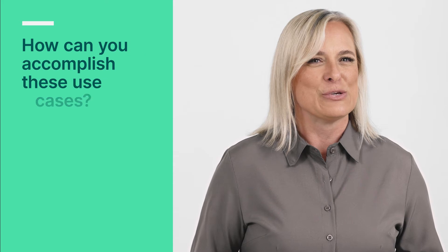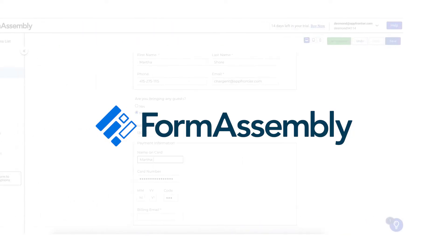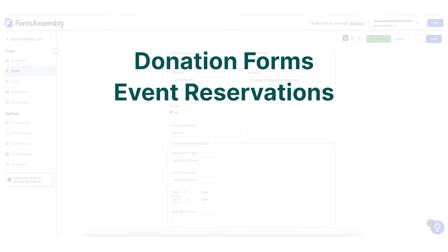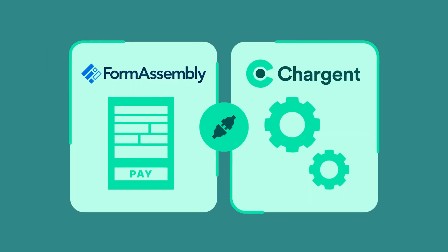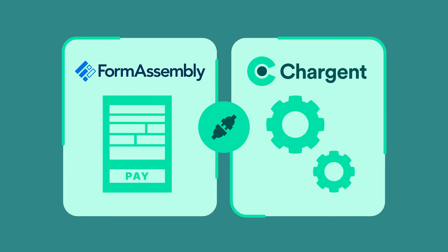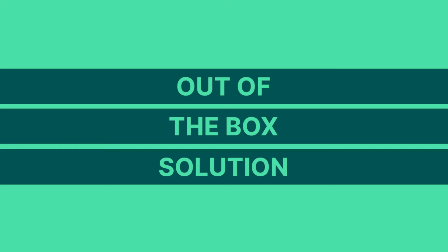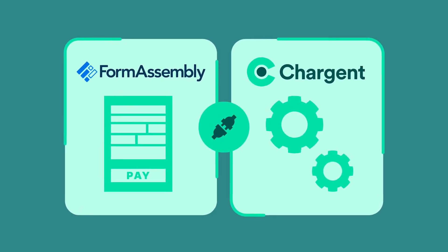So how can you accomplish these use cases? There are three options. The first option involves working with our partner FormAssembly. With FormAssembly, you can create donation forms, event reservations, order forms, appointment bookings, and much more. The online forms can be set up on your company website, and FormAssembly offers a Chargent connector which integrates the online forms with Salesforce and Chargent with very little configuration to be done. It is an out-of-the-box solution which enables companies with this use case to get up and running very quickly. You can learn more about our partnership with FormAssembly and their Chargent connector on our website.